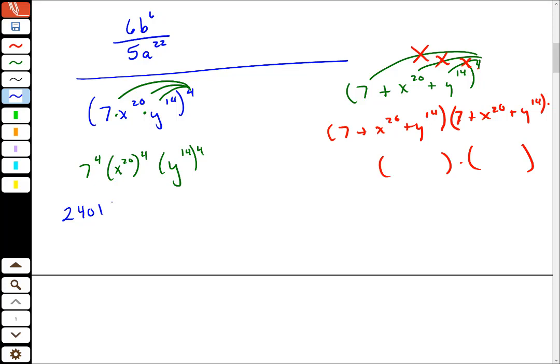Okay, x to the 20th to the 4th. This, x to the 20th to the 4th power means that I multiply and I get multiply exponents, so I get 20 times 4, so 2401. 20 times 4 is 80, right?